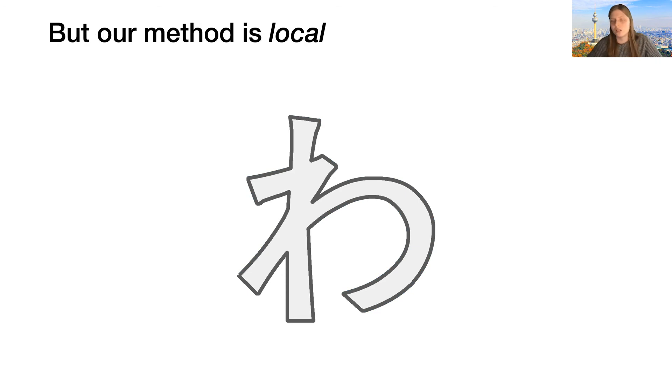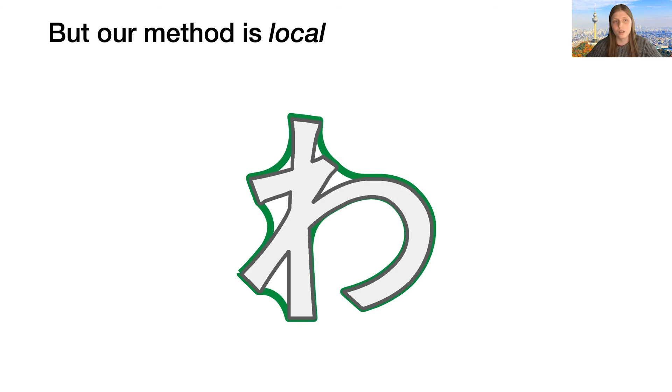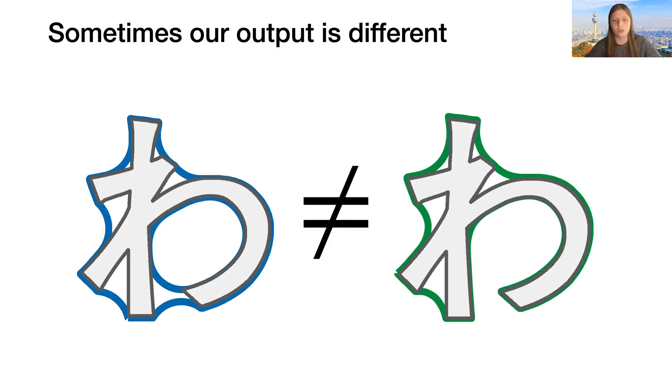However, our flow is local. It is based on curvature, which is a local quantity. So there's no way for these two points to talk to each other and know that they should be merged with each other. Therefore, the output of our flow will look like this, which is different from the traditional closing.